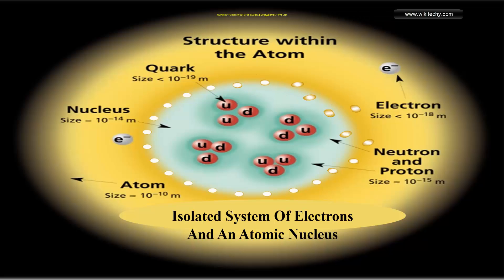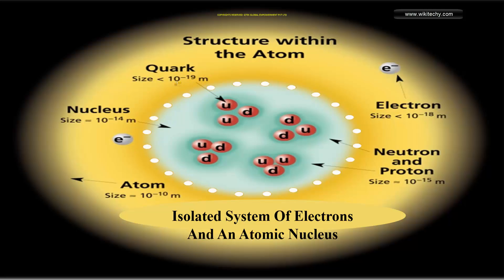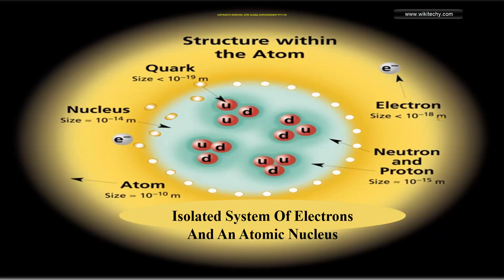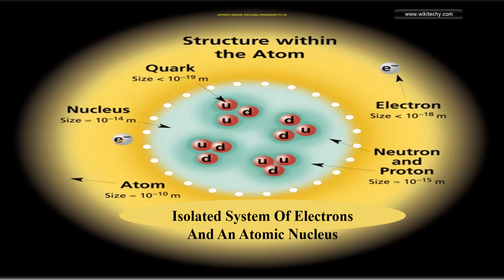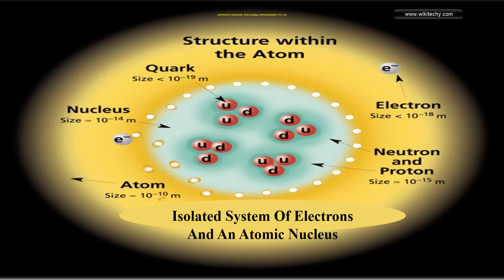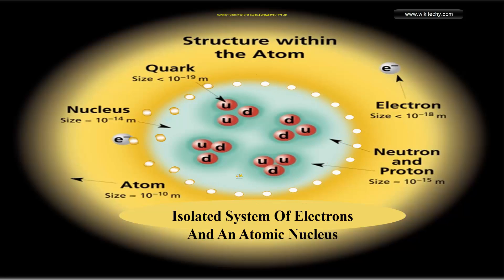This is the structure of an atom, which has the nucleus. The quark is less than 10 to the power of minus 19 meters. The electron is around 10 to the power of minus 18 meters. Neutrons and protons are of size 10 to the power of minus 15 meters, and the nucleus is 10 to the power of minus 14 meters. The entire atom is approximately 10 to the power of minus 10 meters, with the nucleus and electrons around it.